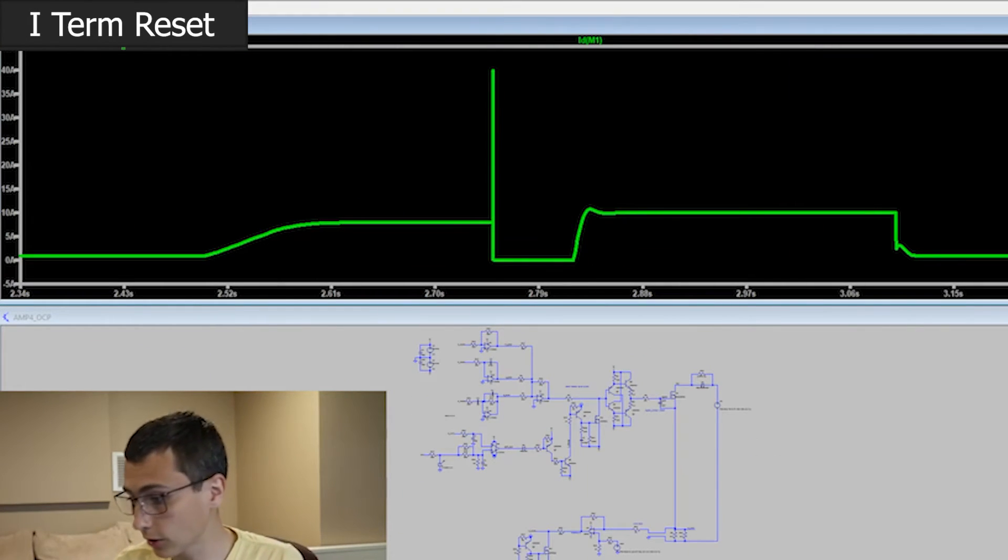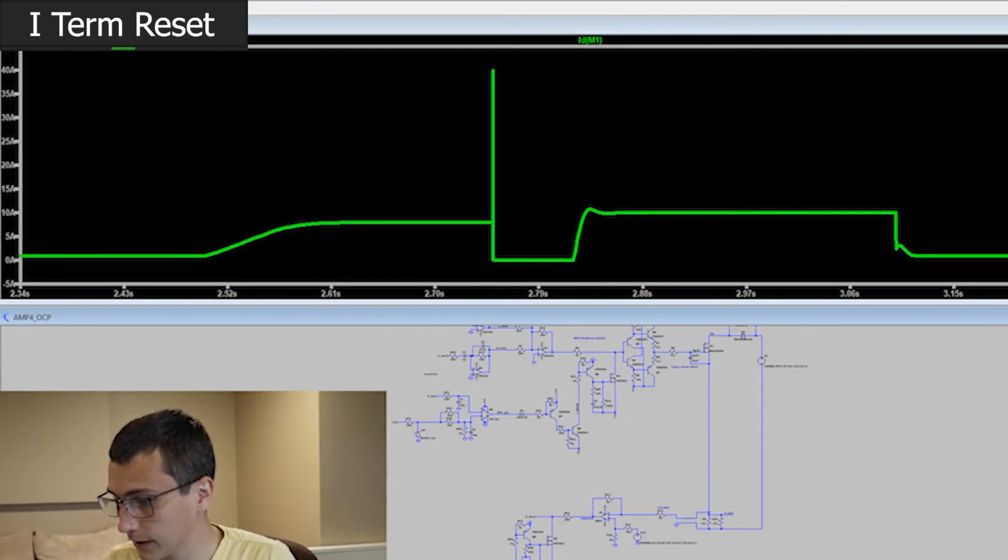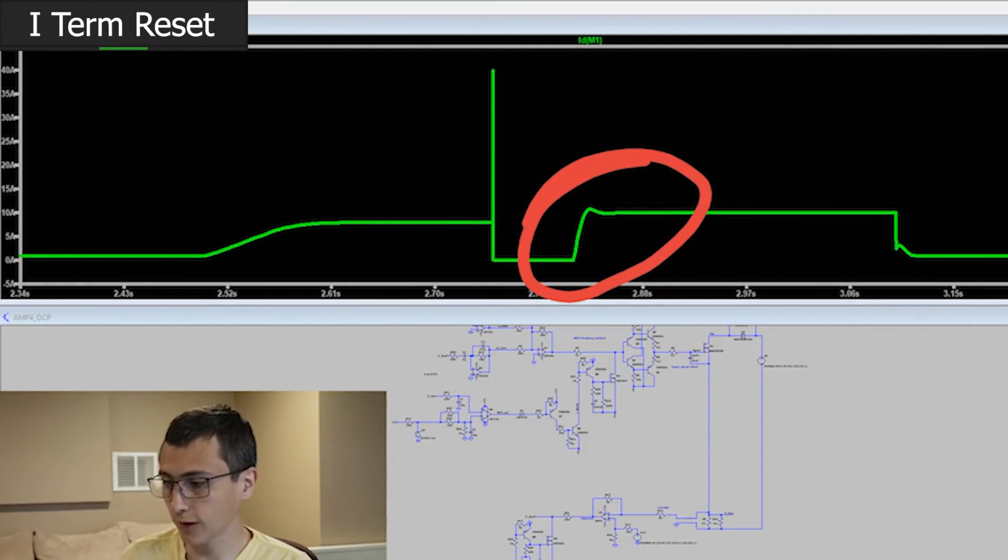On the integrator term, how could I forget about the integrator term, that was one of the big issues in our previous design. Basically, the integrator didn't completely reset. And you can see from the way that this is behaving, you can see from this beautiful transient response, it looks just like we had turned it on for the first time. I found a way to completely reset the integrator. And basically, rather than set the set point to zero amps, I set the set point to negative 15 amps, or negative 15 volts worth of amps, which is a lot.